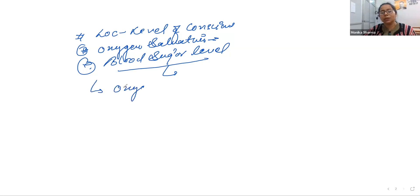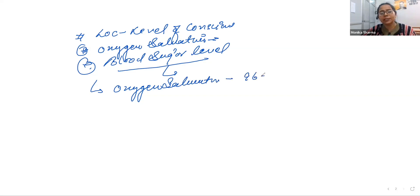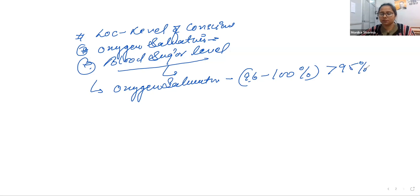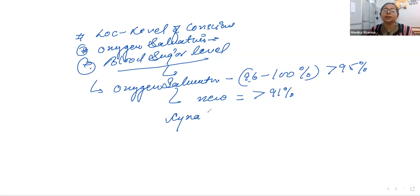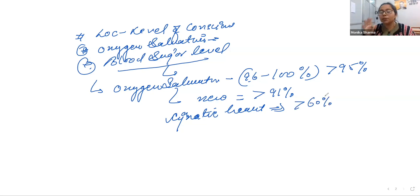If we talk about oxygen saturation, the normal level should be between 96 to 100%. In the case of a newborn, it should be more than 91%. For a child with cyanotic heart defects, oxygen saturation should be more than 60%, because there is mixing of oxygenated and deoxygenated blood — the ventricles pump mixed blood into the aorta — which is why oxygen saturation levels are lower.